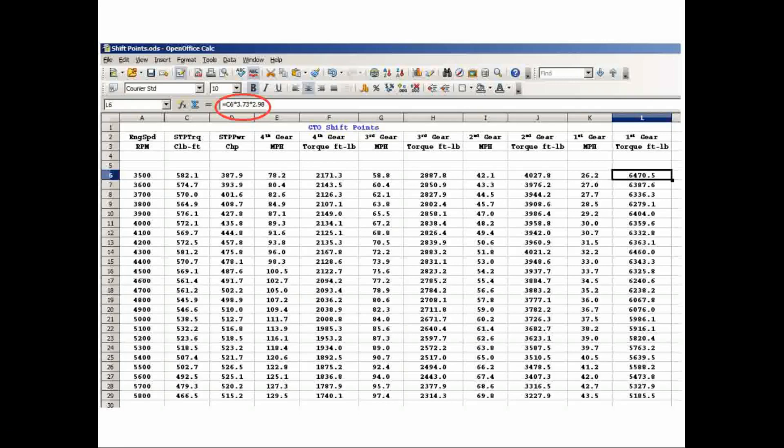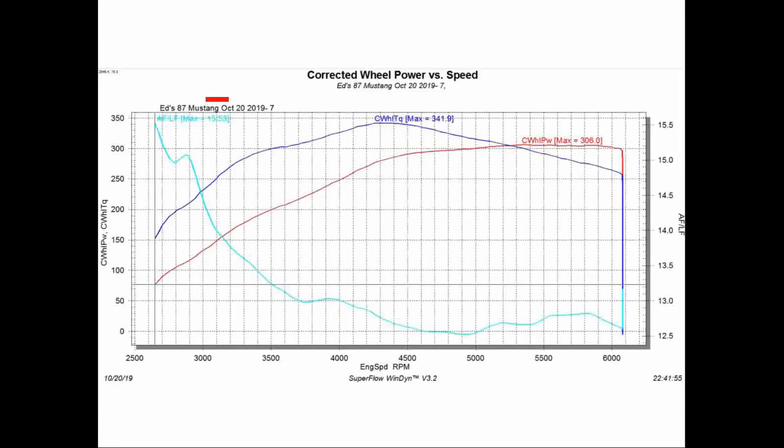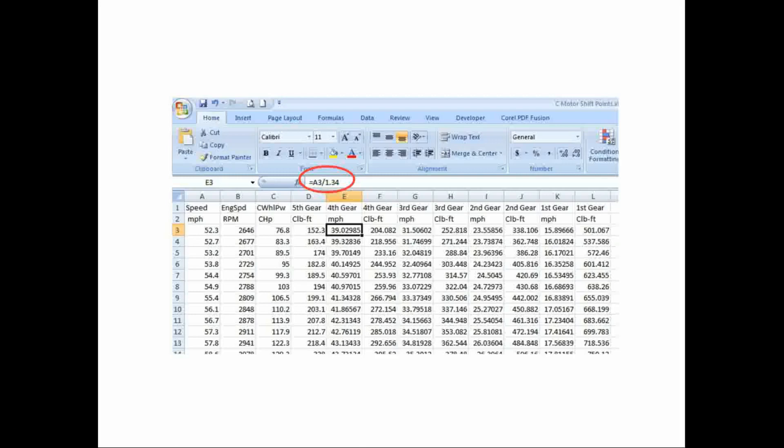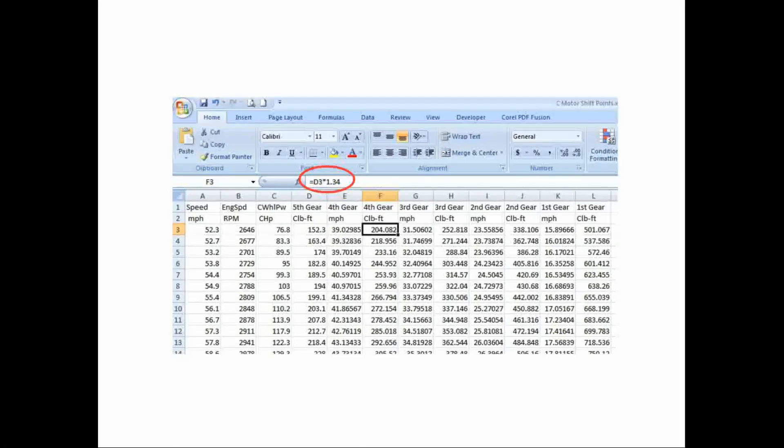Now, if you had chassis dyno data where you've got torque versus engine speed, it's even easier. If you dyno'd the car in a 1 to 1 high gear ratio, and why wouldn't you, you can easily calculate the speeds and drive wheel torques for the other gears by simple multiplication or division of the high gear torque and speed, respectively. For my Mustang, I have chassis dyno data for runs made in 5th gear, which is a 1 to 1 ratio in my race transmission. So, for example, generating 4th gear data is just dividing speed by the 4th gear ratio of 1.34 and multiplying dyno torque by 1.34.